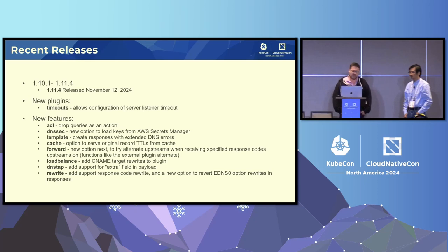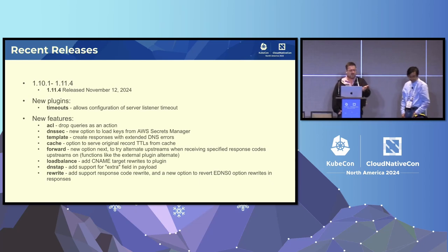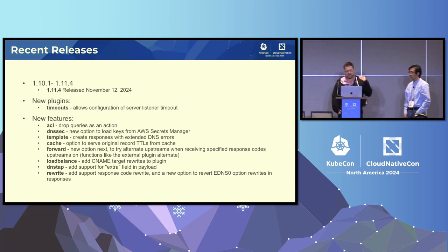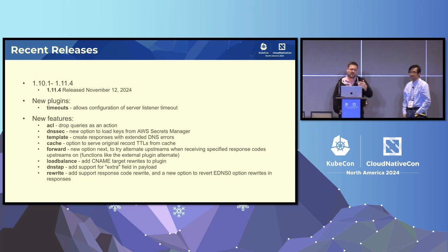In the latest release we have a new option for the forward plugin. Forward is a way that CoreDNS works as a proxy — if you use node local DNS in Kubernetes, you have a CoreDNS on the node that forwards to the central CoreDNS. CoreDNS isn't actually a recursive name server; it just caches, but it will forward to a recursive name server and cache the result locally. We've for a long time had another plugin called 'alternate' that allows you to tweak the behavior based on the response code you get back from the upstream recursive resolver — if you get NXDOMAIN, NODATA, or SERVFAIL, you can try a different server. That's been integrated into the forward plugin as opposed to being an external plugin.